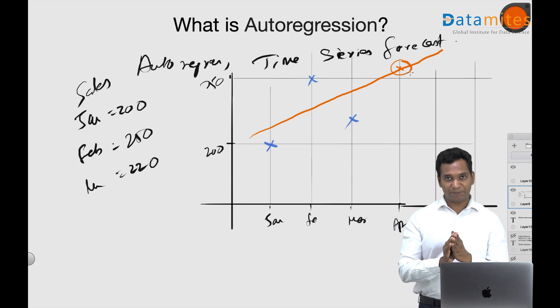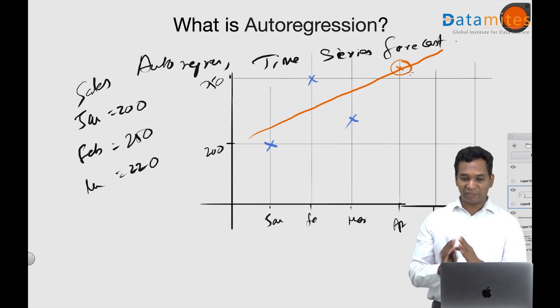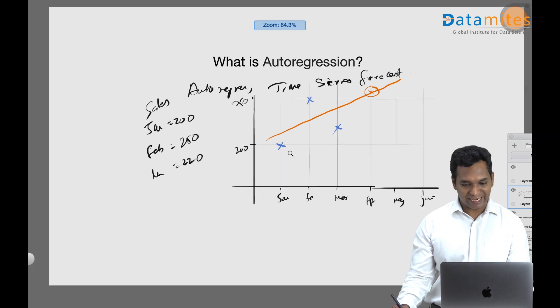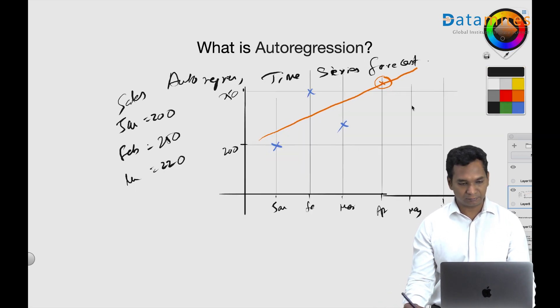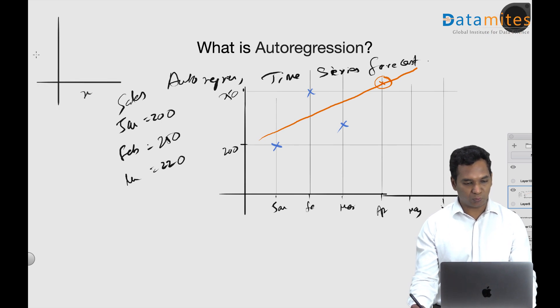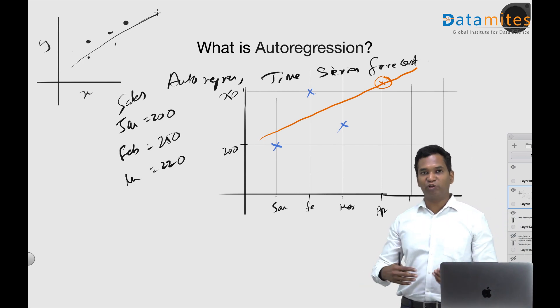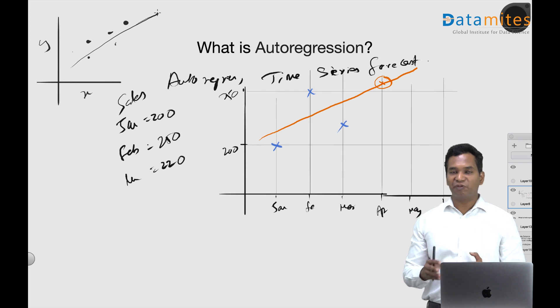In a typical regression what we have is x and y. So you have x and y - in a normal regression you have x and y as several points, and you fit a line, and you use this line for predicting y value given x.